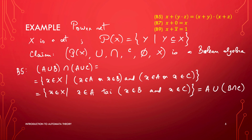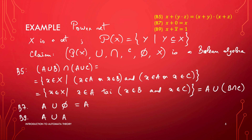For B7, it's simply about observing that if you take a set and do union with the zero element — in our case the empty set — the result is obviously A. That's exactly what B7 says. For B9, it's a matter of translating what plus and complement mean in our structure: A union the complement of A equals by definition the full set X. So B9 is also satisfied.